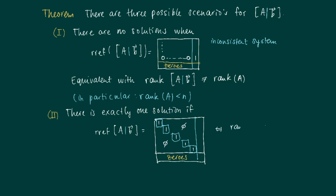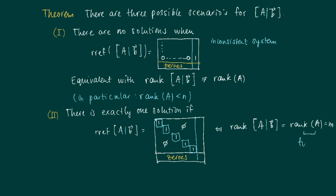The rank of the augmented matrix A|B equals the rank of A, because the number of pivots equals the number of pivots from the original matrix. This is the same as saying that A has full rank — meaning each of the columns of A gets a pivot.